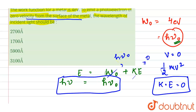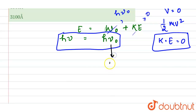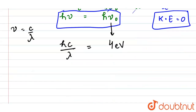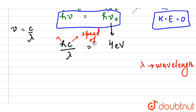Now we substitute the values. We don't know ν directly, but we know ν = c/λ, so we can write hc/λ = 4 eV. What we need to calculate is the wavelength λ. Here h = 6.626 × 10⁻³⁴ J·s is a constant, and c = 3 × 10⁸ m/s is the speed of light.